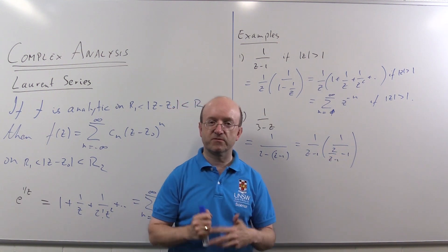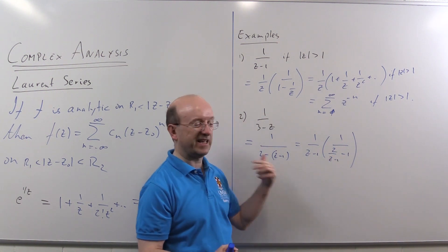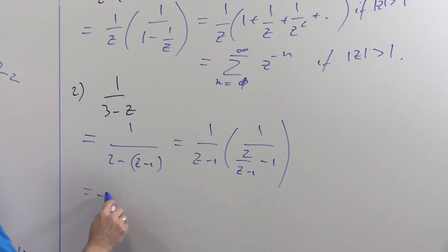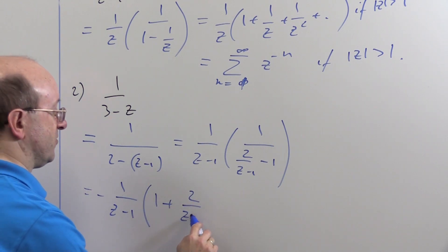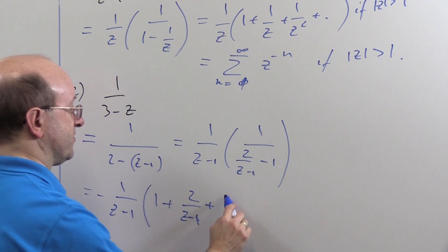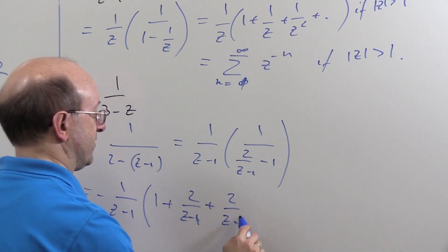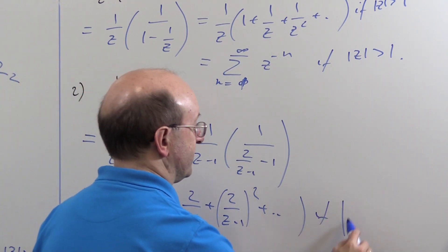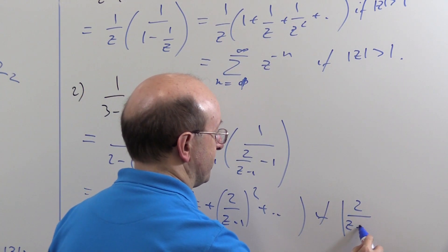That's actually the wrong way around from the geometric series. I should have taken out a minus sign as well. We'll do that at this stage. That will be minus 1 over z minus one into 1 plus 2 over z minus one plus 2 over z minus one squared plus and so on, if this thing I'm taking powers of z minus one as modulus is strictly less than one.